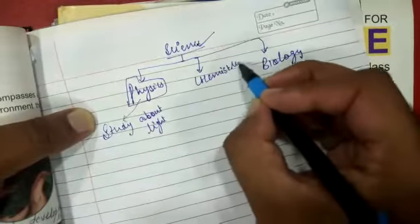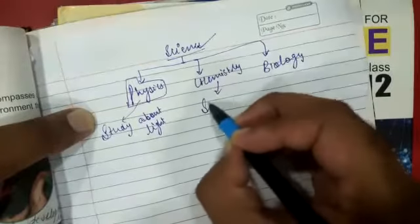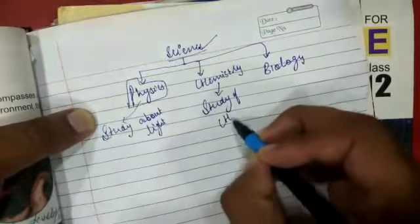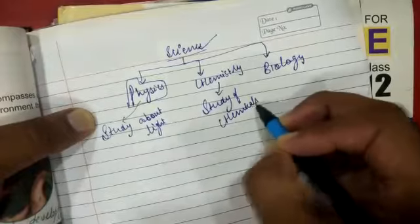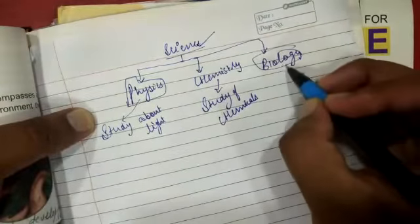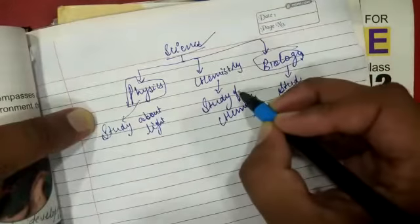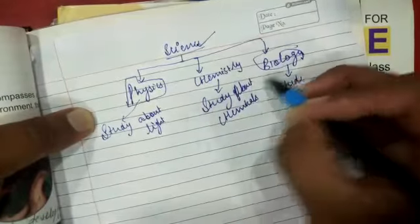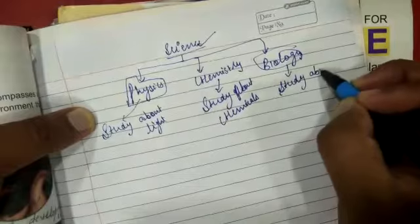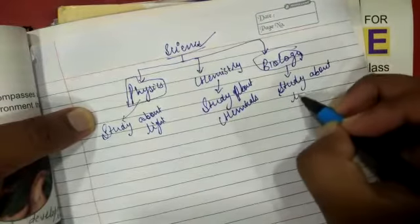Chemistry is that part in which we will study about chemicals, and biology is that part in which we people will study about living beings.